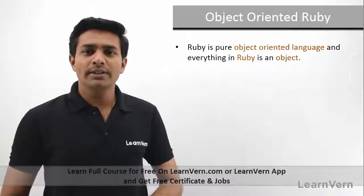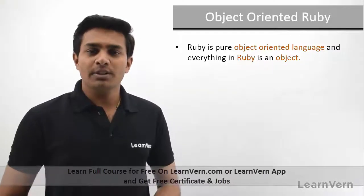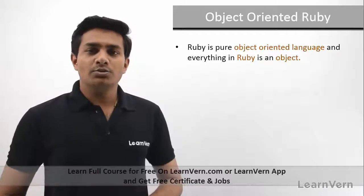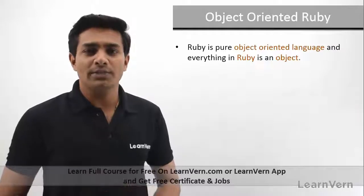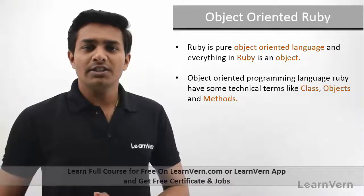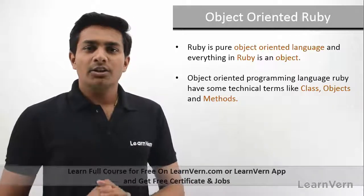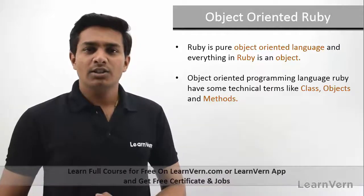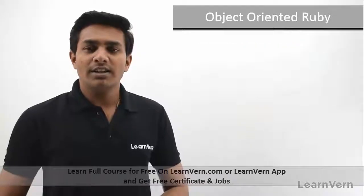Ruby is a pure object-oriented programming language. In Ruby, everything is an object. If you are creating some variable, you are creating objects that all belong to some class, because they are actually objects. As Ruby is an object-oriented language, it has some technical terms such as class, objects, methods, etc.